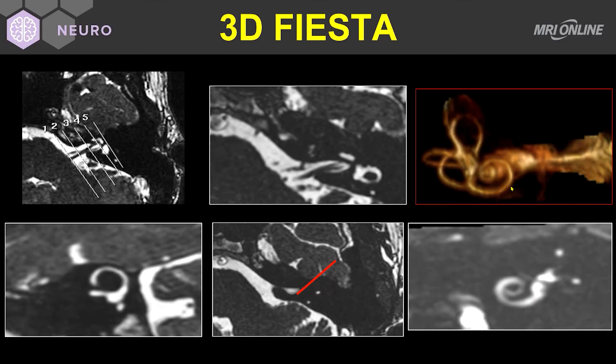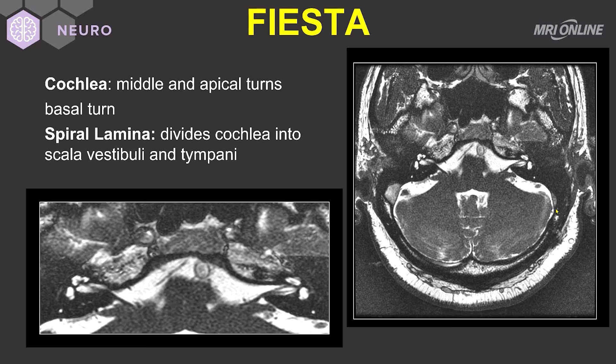I want to point out the spiral lamina, an important portion of the anatomy. The spiral lamina divides the cochlea into the scala vestibuli and the scala tympani. This anatomy is important with respect to congenital abnormalities of the cochlea and vestibule, and may also be part of the problem associated with Meniere's disease. Frankly, with Meniere's disease we don't have great anatomic correlation with the patient's symptomatology, but people are looking at this fine anatomy within the turns of the cochlea — the spiral lamina.